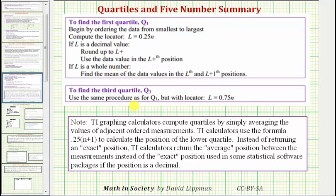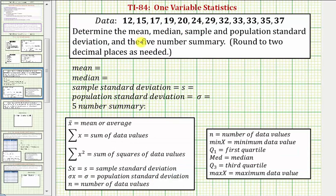Let's go ahead and take a look at an example where we use the TI-84. We want to determine the mean, median, sample and population standard deviation, and the five number summary using the TI-84 graphing calculator. So for the five number summary, which is the min, Q1, median, Q3, and max, we will use the values from the TI-84 graphing calculator.